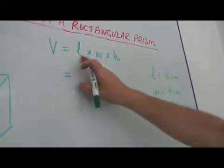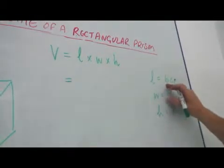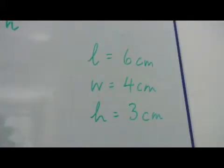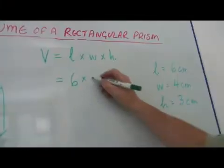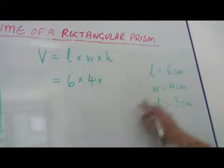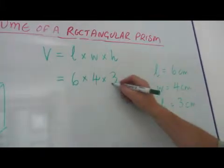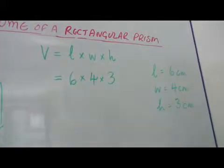So the volume is equal to the length. The length here is 6 centimeters. Multiplied by the width. The width here is 4 centimeters. Multiplied by the height, which is 3 centimeters. These are numbers chosen to give a simple result.